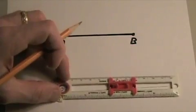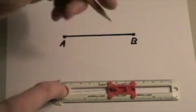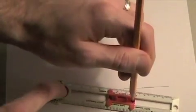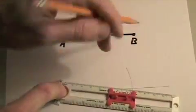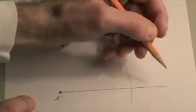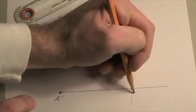Move the compass down onto A prime. And then using that same opening on the slider, spin a little arc. And then where that arc intersects the new line segment is where we're going to make B prime.